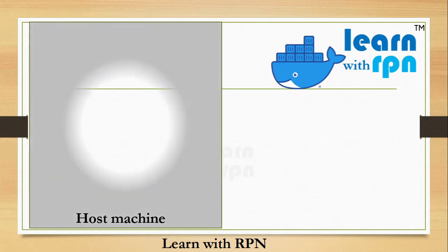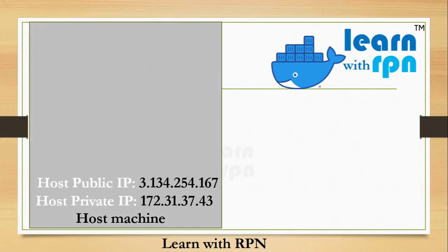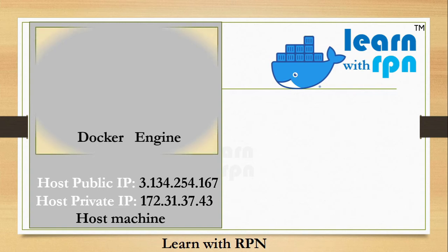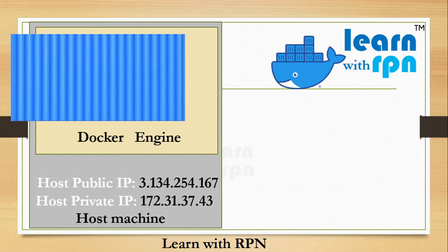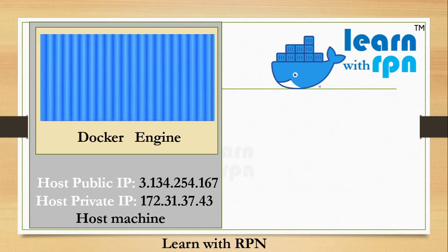Here is a host machine having a private IP and public IP. Docker engine is installed on this machine, where one container is there called rpn web server, having an internal IP and running on default port 80.